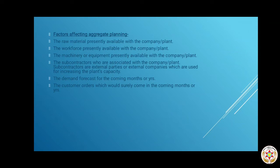The last factor is customer orders which would surely come in the coming months or years. When making an aggregate plan, we allocate resources based on customer orders — we are working to fulfill those specific orders. If there are no customer orders, then there is nothing to make and no resources to allocate. So based on these customer orders, we create a plan on how to fulfill them.